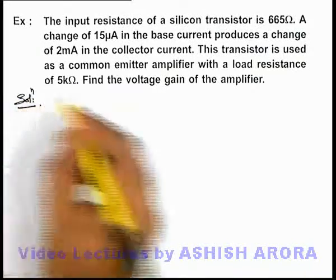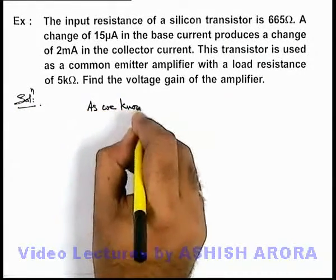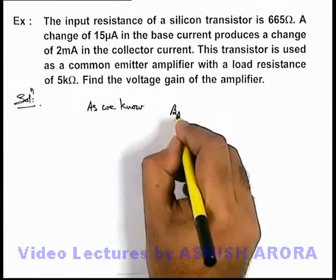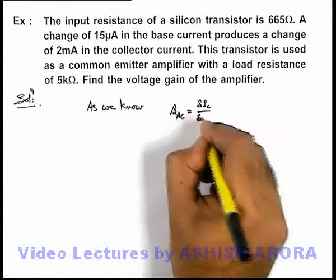In this problem, we can directly write as we know the value of beta AC, the current gain, can be given directly as delta i-c over delta i-b.